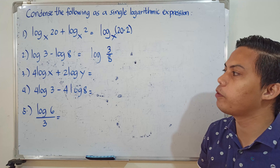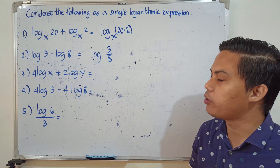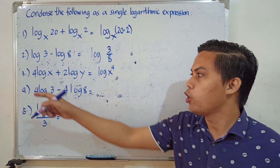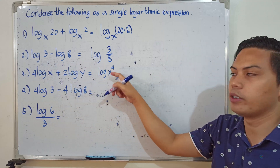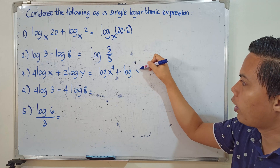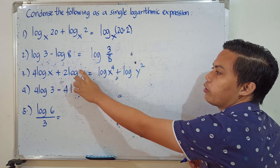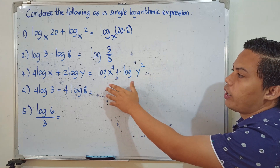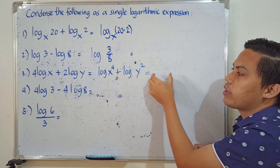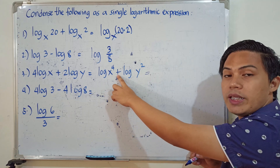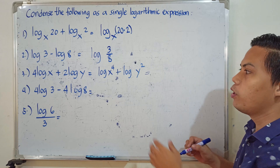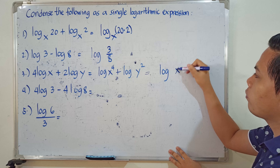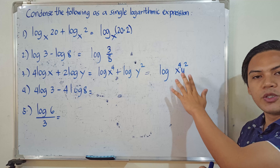Number 3: 4 times the logarithm of x plus 2 times the logarithm of y. First, we apply the power rule — the numerical coefficients become exponents. This gives us the logarithm of x raised to 4, plus the logarithm of y squared. This is not yet the final answer. Since the operation is addition, we apply the product rule and multiply them: the logarithm of x⁴ times y². This is the final answer.